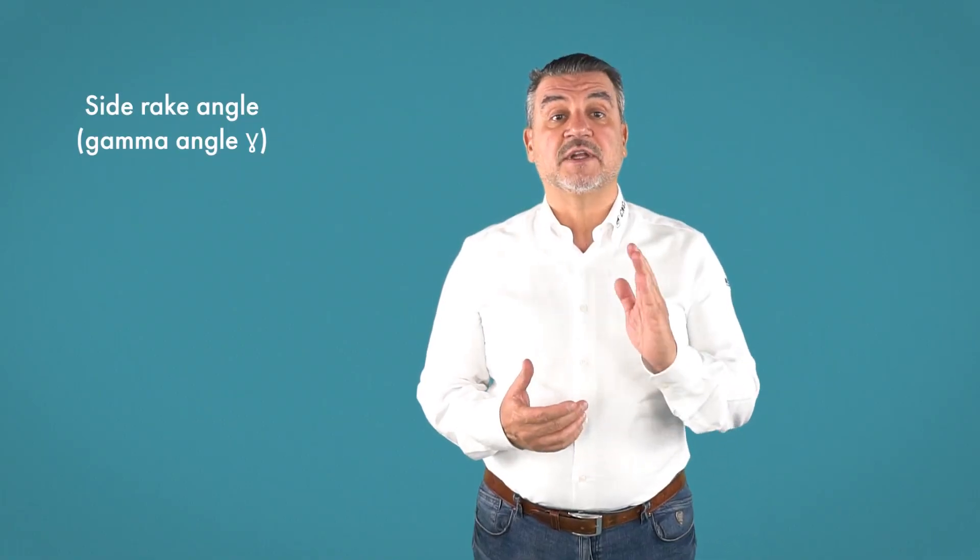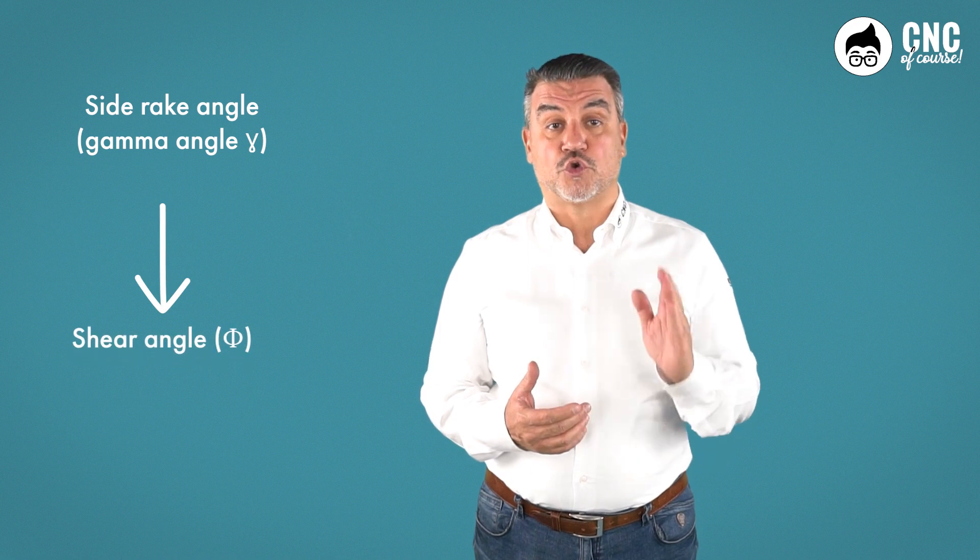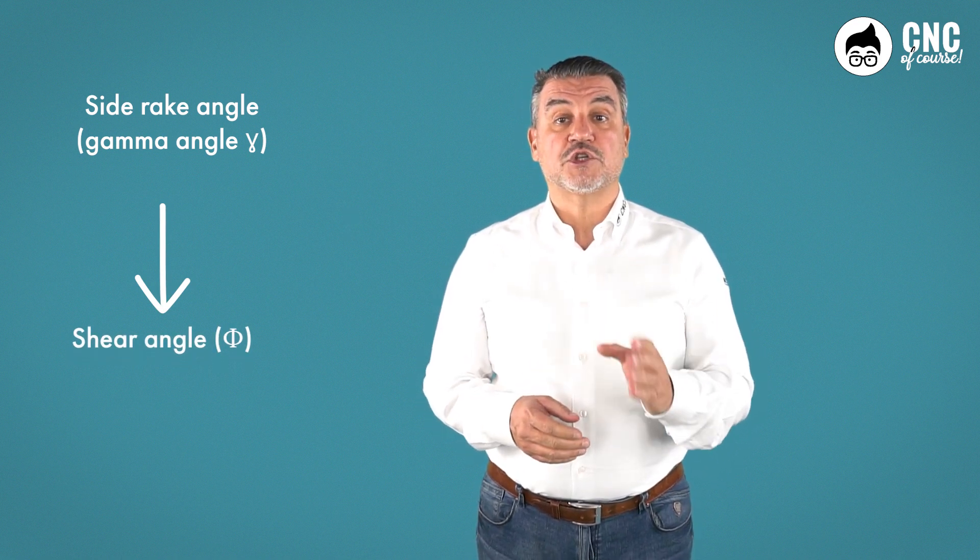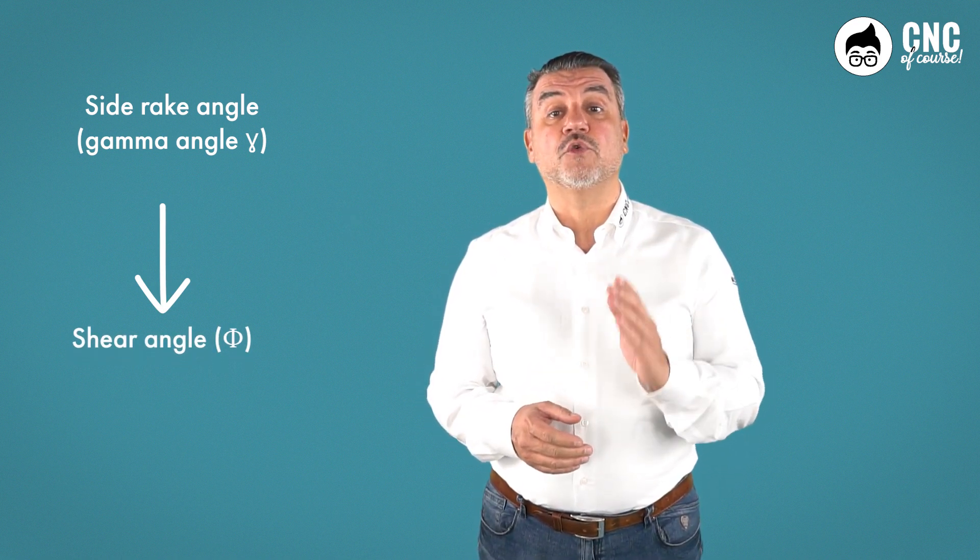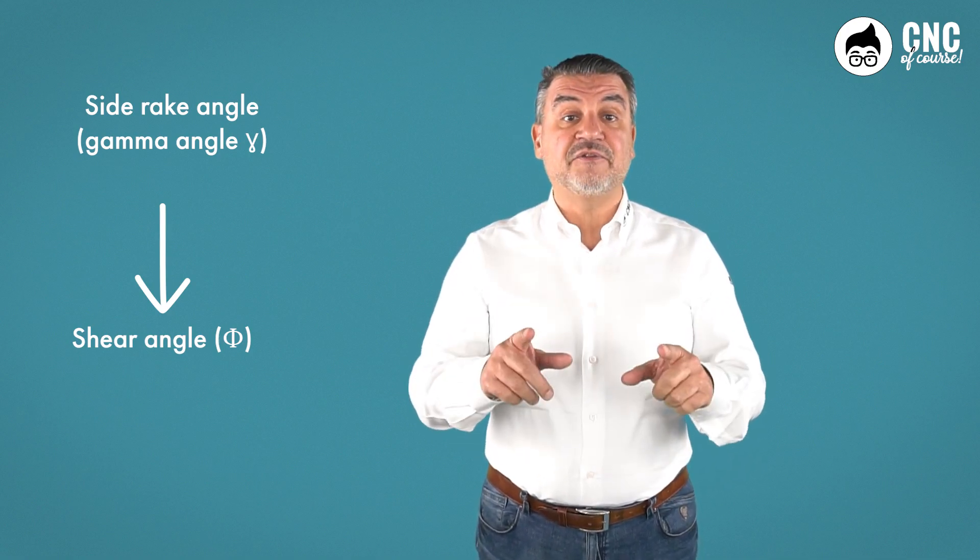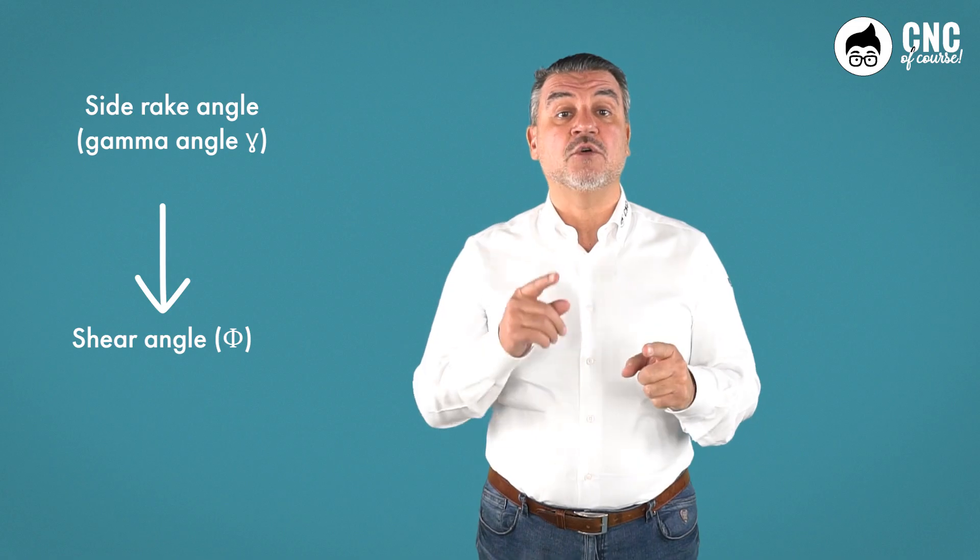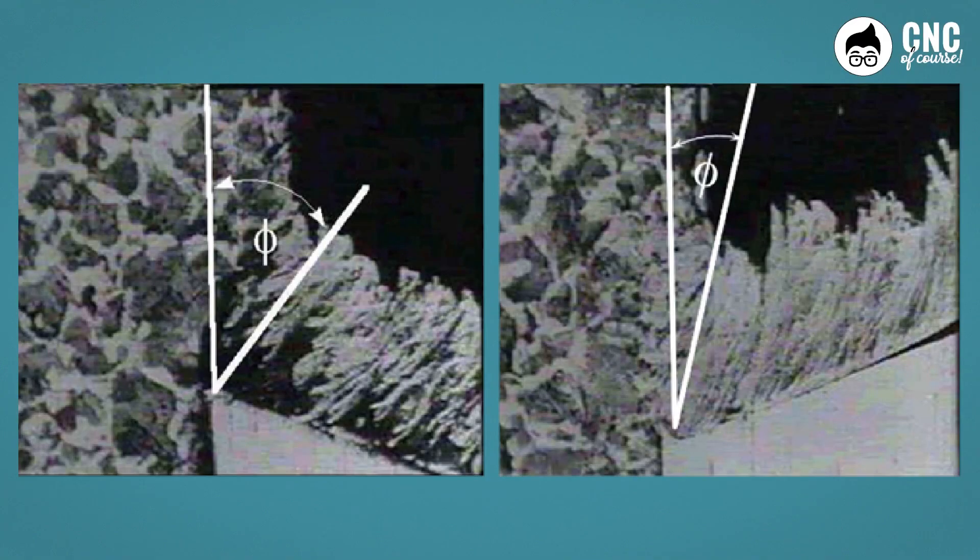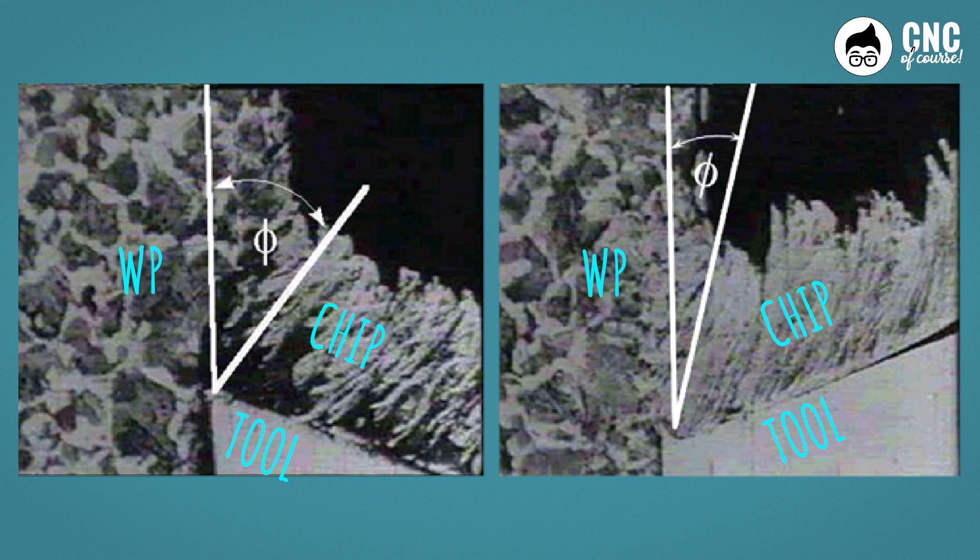The rake angle, also known as the gamma angle, simply defines the angle at which the tool face is positioned in relation to the chip flow on the face. The rake angle is therefore the angle that affects the direction of chip flow, which will have different angles depending on the rake angle. The two images are an enlarged picture of what happens at the point of contact of the chip on the face of the cutter.